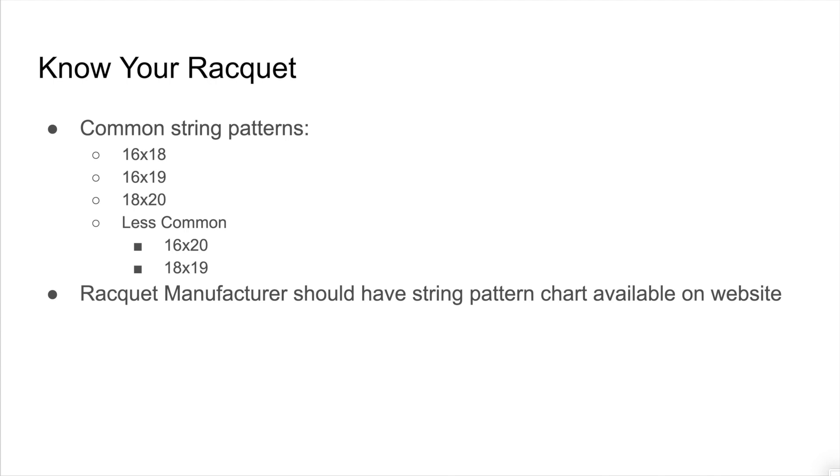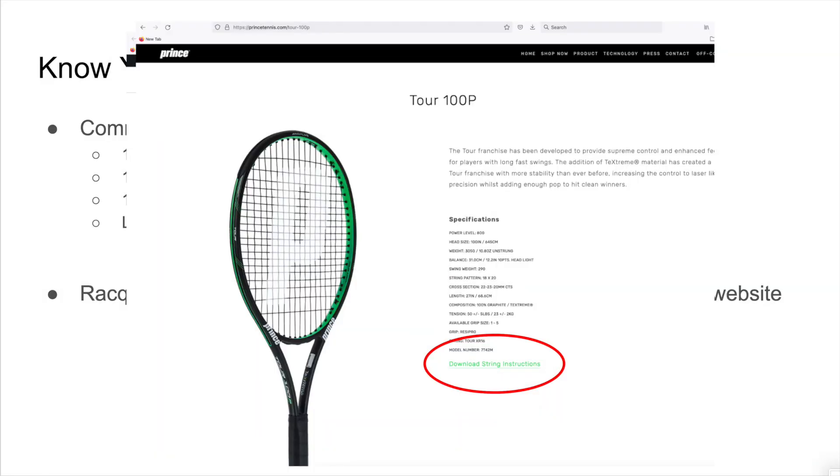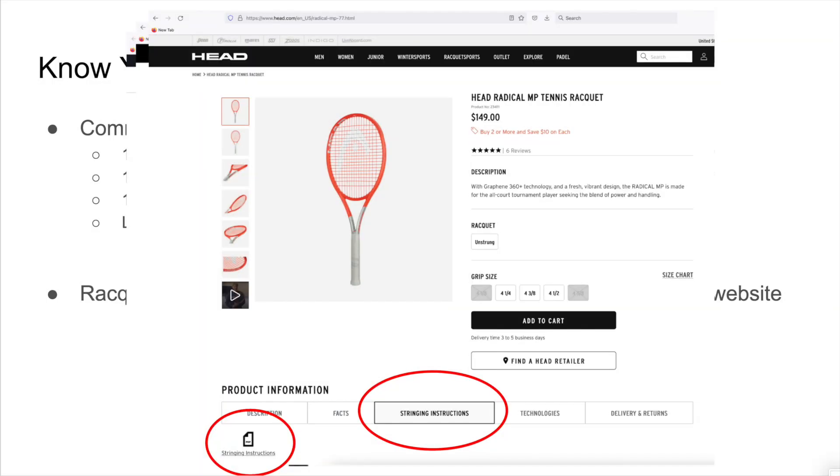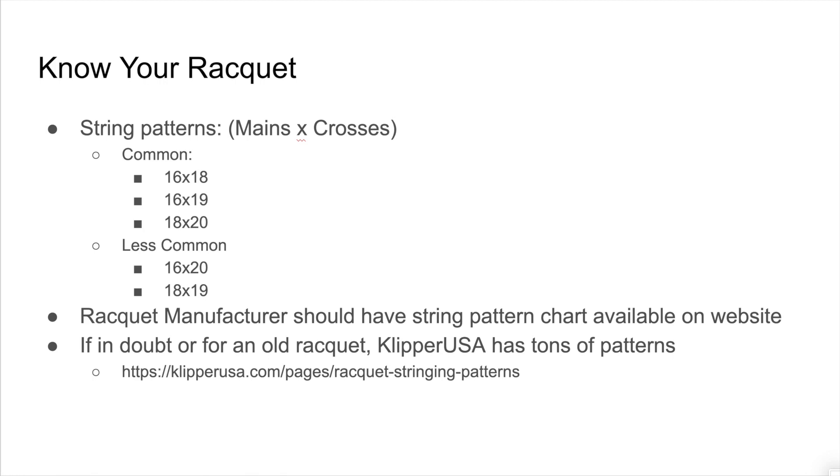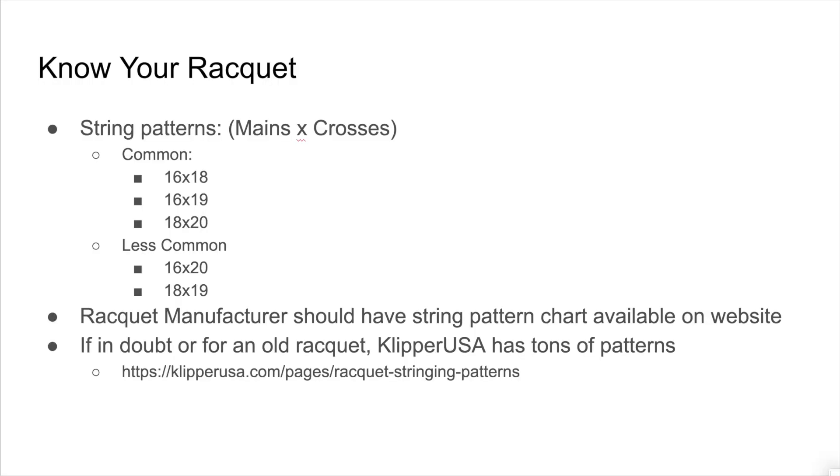Once you know the pattern, you can go to the racket manufacturer's website to find the actual stringing pattern chart, which is going to tell you directly how you string the racket. Each company should have that on their website. For example, here is Wilson's website, or Prince's website, or Head's website. Each website will be a little bit different, but you are essentially looking for the string instructions or string pattern. When in doubt, you can go to the Clipper USA website. They have tremendous information about stringing rackets of all ages. So if you have an older racket or can't seem to find the stringing pattern, go to ClipperUSA.com. It is a great resource.